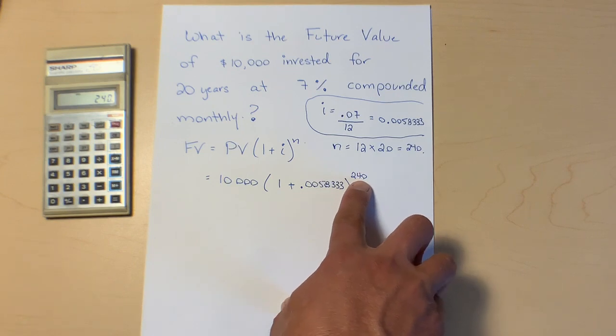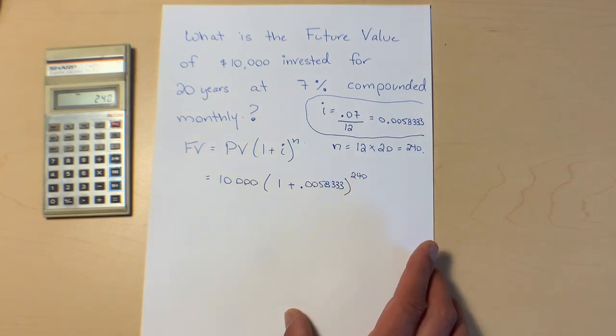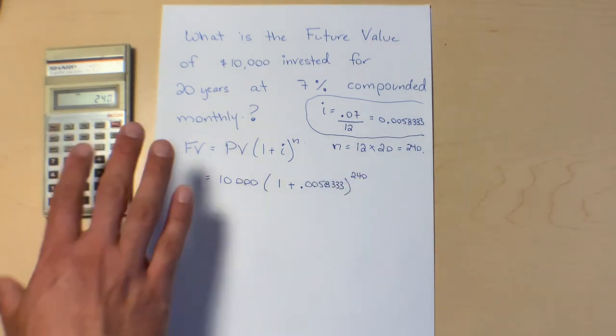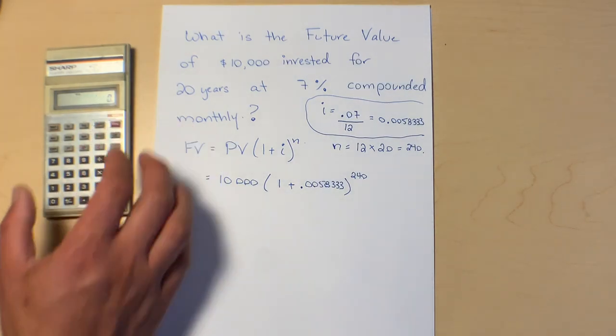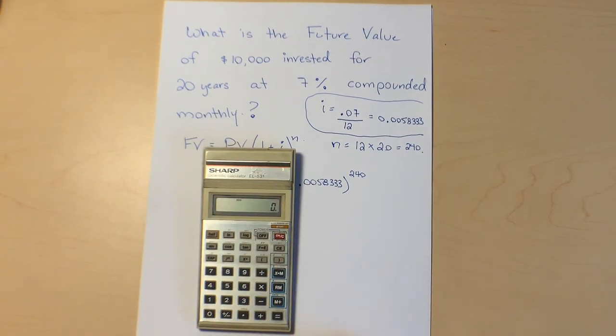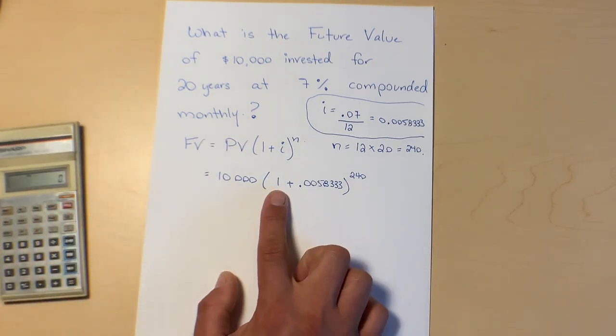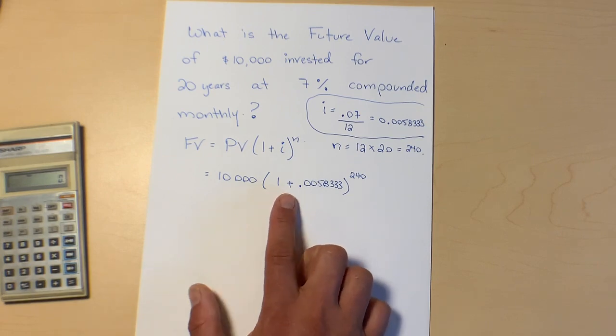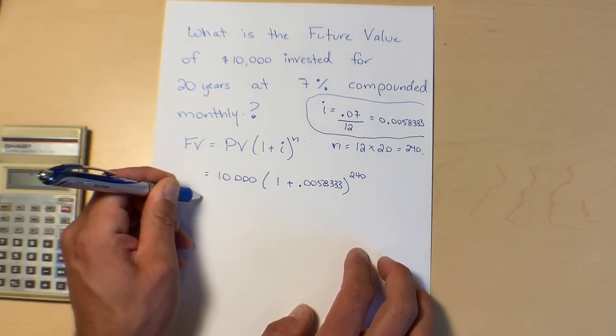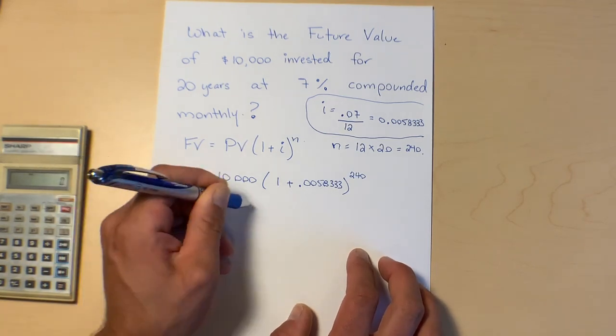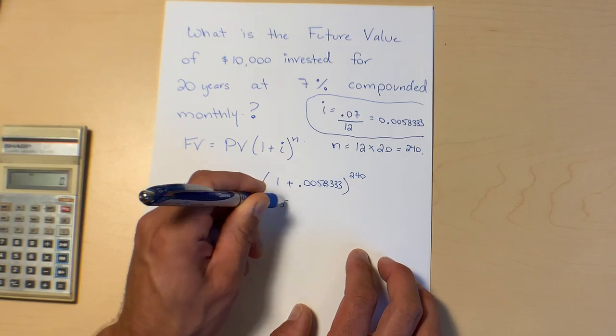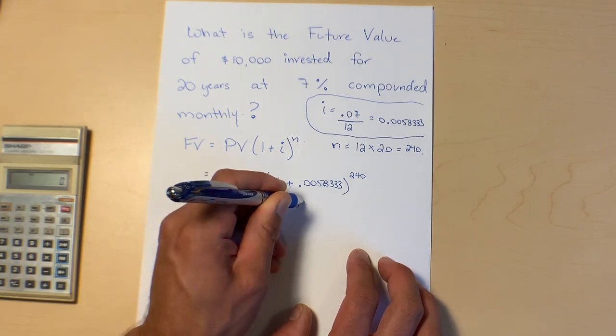So up here this little exponent is going to be 240, and that probably feels weird because a lot of the times we're not used to putting in big exponents like that. But it is a thing in financial math. You can get really large exponents, you can also get negative exponents. Your calculator can totally do it. Even this 1970s calculator can do it. But it's just something for us to get used to. Okay, so now we're going to go and solve this. Remember your order of operations, we're going to do brackets first. So 10,000 inside the bracket is 1.0058333.